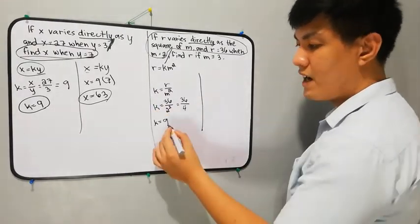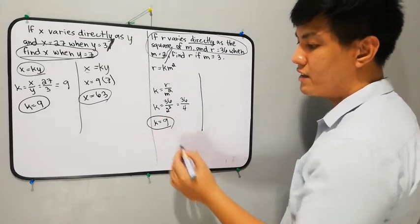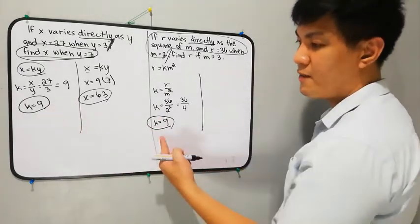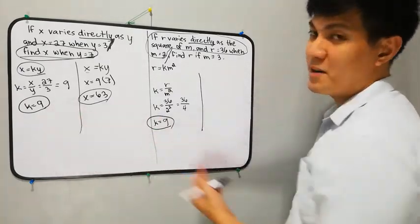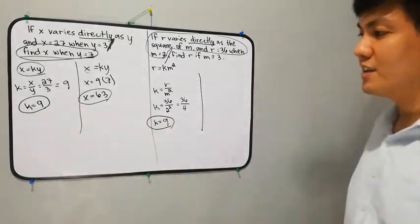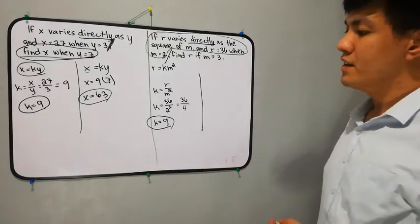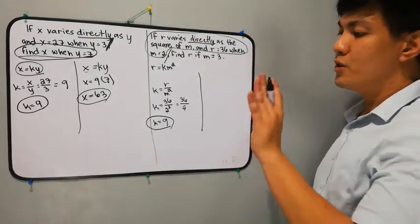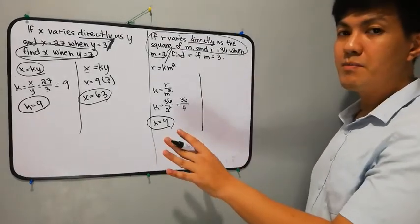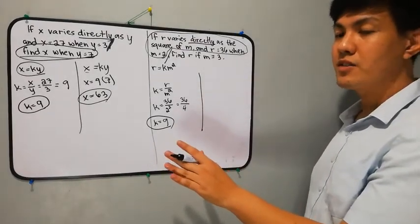K is equal to 36 divided by 4, which is equal to 9. So the value of k here is 9 — that's just a coincidence; it won't always be 9. We're done with finding the constant.